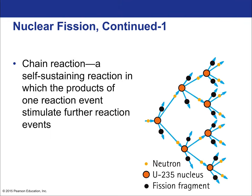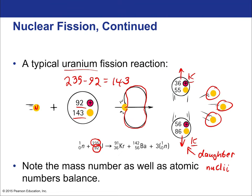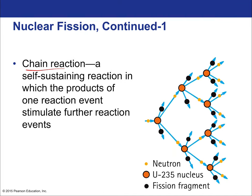A chain reaction is a self-sustaining reaction in which the products of one reaction event stimulate further reaction events. This is a natural fit for fission because three neutrons are produced in the fission of uranium-235, and each of those neutrons is capable of causing its own fission event. This leads to exponential growth of fission events.